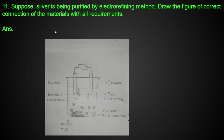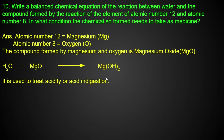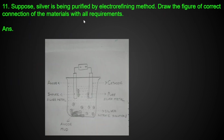Suppose silver is being purified by electrolysis. In electrolysis, the impure silver acts as the anode (positive electrode) and pure silver acts as the cathode (negative electrode), allowing the silver to be purified.